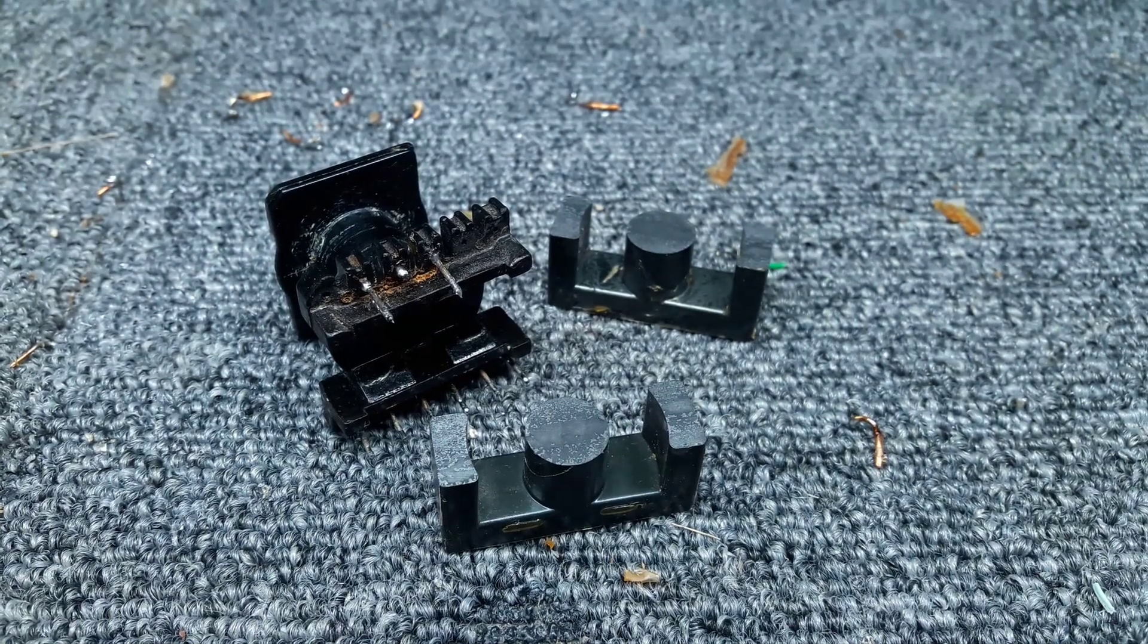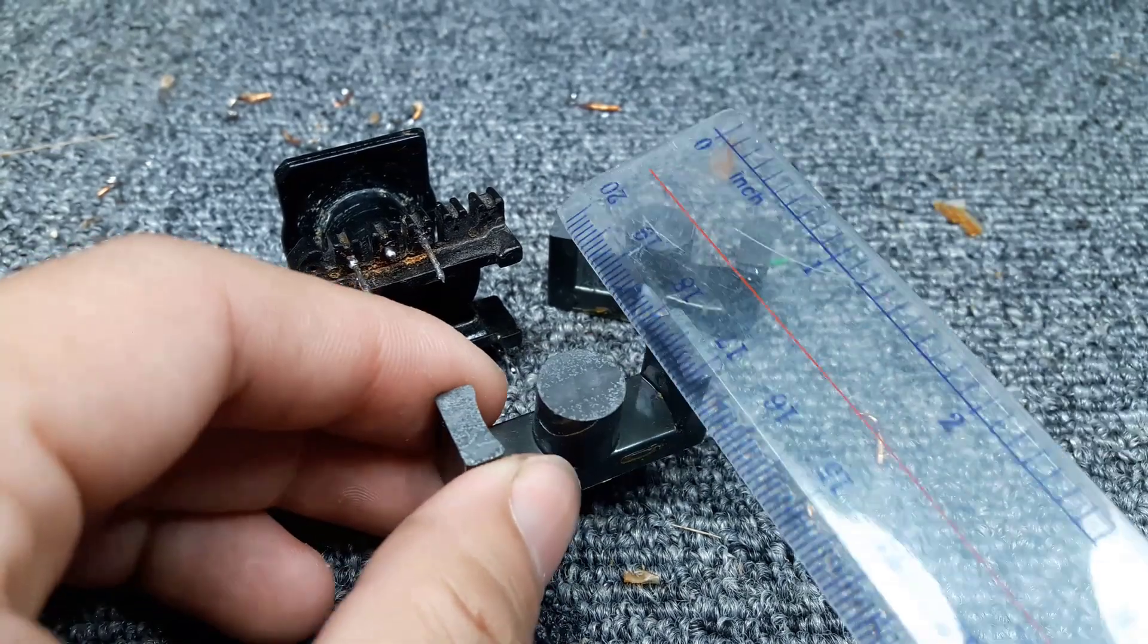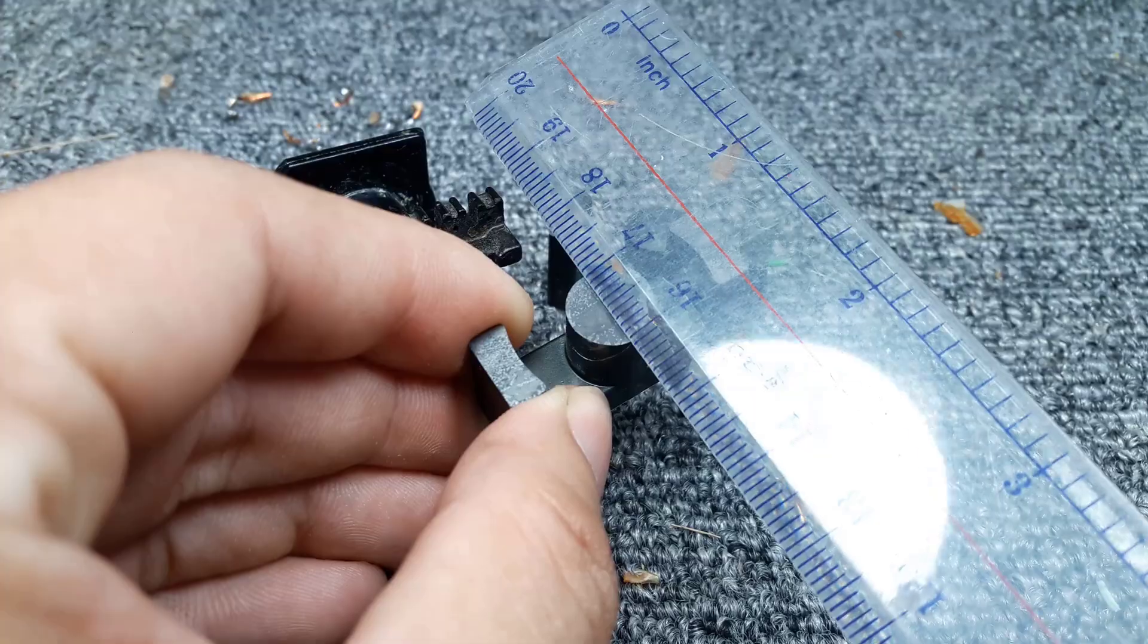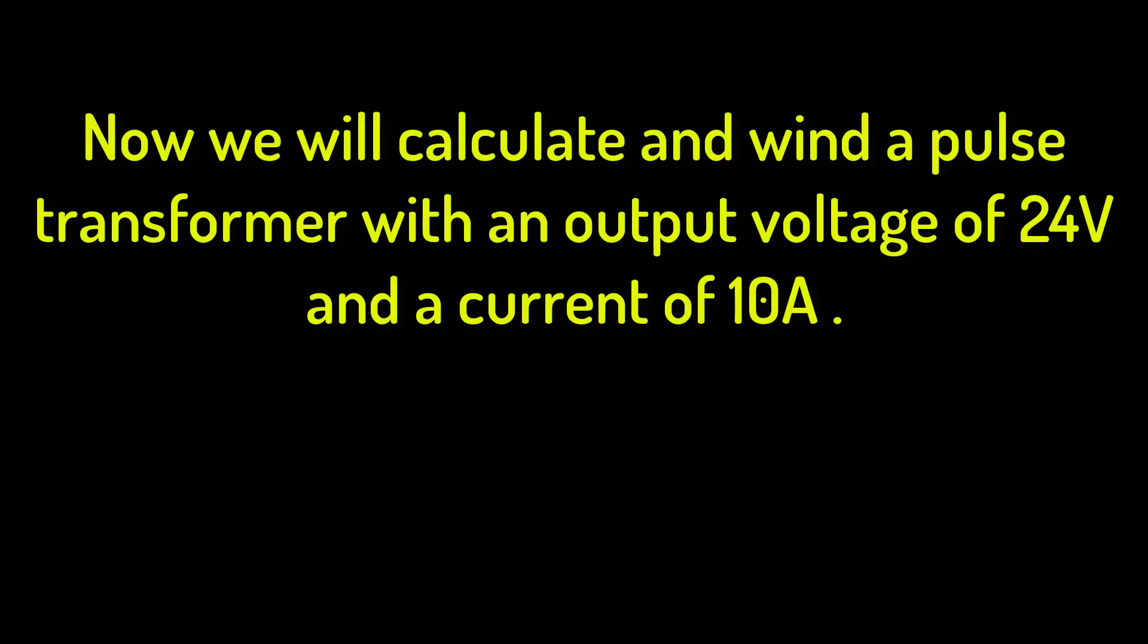And this is the result we get, a pulse transformer with no gap inside the core. Core diameter is 1 cm. Now we will calculate and wind a pulse transformer with an output voltage of 24 volts and a current of 10 ampere.